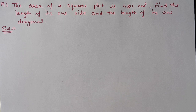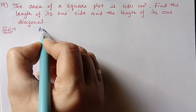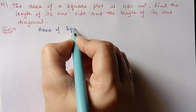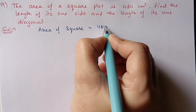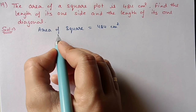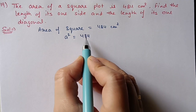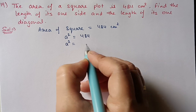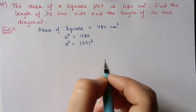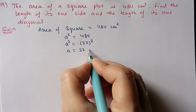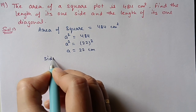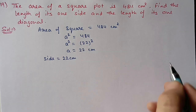Next is Question 19: the area of a square is 484 square centimeters. Find the length of one side and the length of its diagonal. Since area is given, we use: area of square = side². So side² = 484. Factoring 484, it is the square of 22, so side = 22 centimeters.